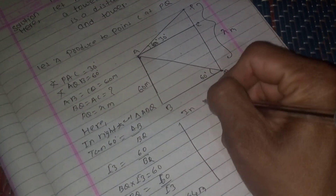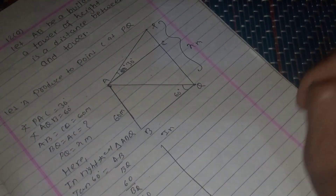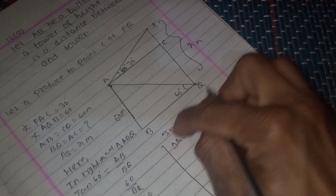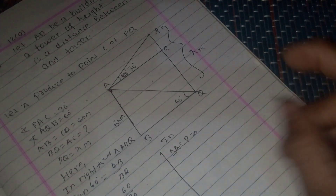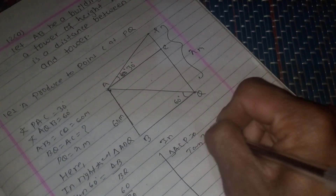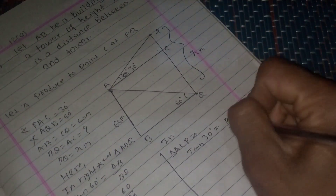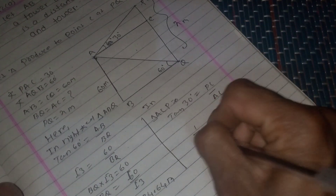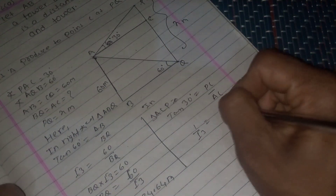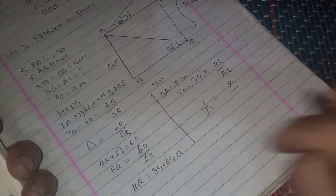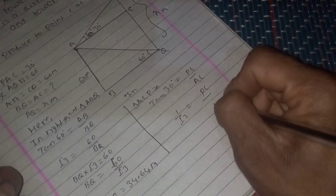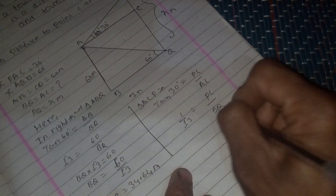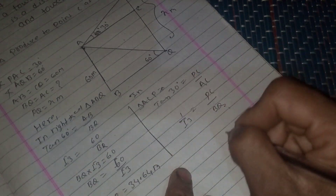Now in triangle ACP, using the angle of elevation of 30 degrees: tan 30 equals PC divided by AC. Tan 30 equals 1 by root 3, and AC equals 60 by root 3.